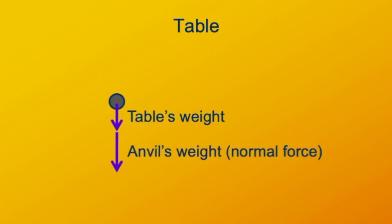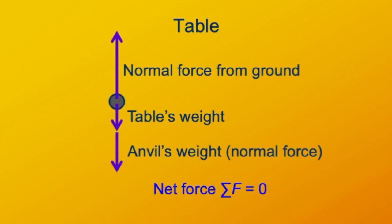What about the table? Well, we can start off with just a circle to denote the table's center of mass. The forces acting on the table would be its weight. That's a force exerted by the earth pulling down on it. And then there's an additional force pushing down on the table, and that's the weight of the anvil, where you could say this is the normal force from the anvil on the table. To counteract these, we have the normal force from the ground. So the normal force from the ground has to be greater in this situation than it would be if the anvil weren't on the table, because the normal force has to counteract both the weight of the table and the weight of the anvil. But once again, all of these forces have to add to zero if the table's not accelerating.